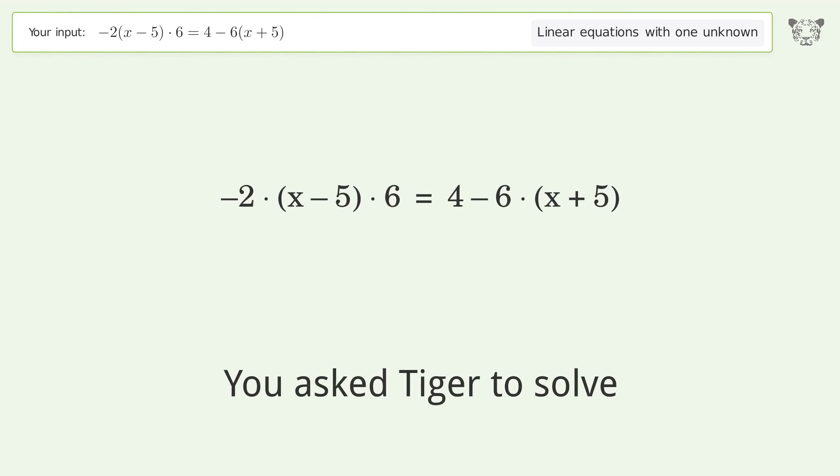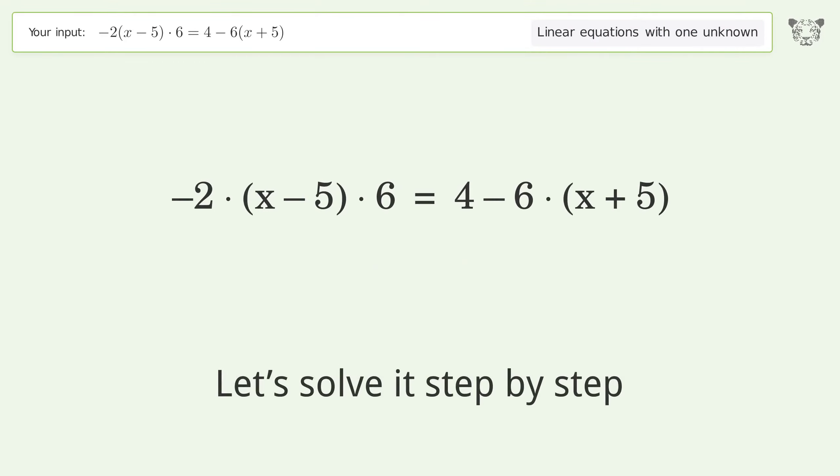You asked Tiger to solve this linear equation with one unknown. The equation is -2(x-5)*6=4-6(x+5). The final result is x equals 43 over 3. Let's solve it step by step.